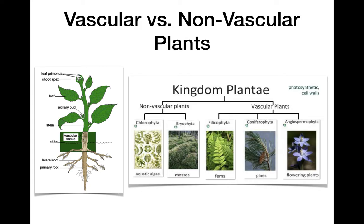Vascular means having vascular tissue, which is made of xylem and phloem. So ferns, pines, and flowering plants — these three phyla all have vascular tissue, whereas mosses and algae do not. Take a minute and think about how these different plants differ based on the fact that some have vascular tissue and some do not — what is fundamentally different about those that do not?